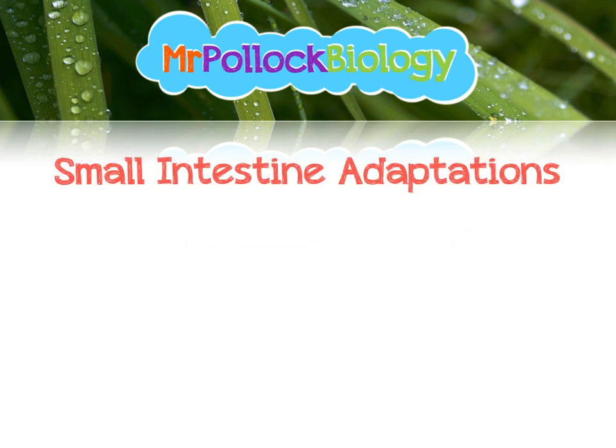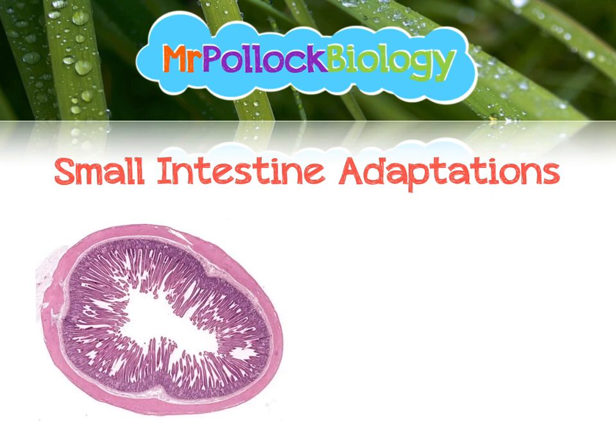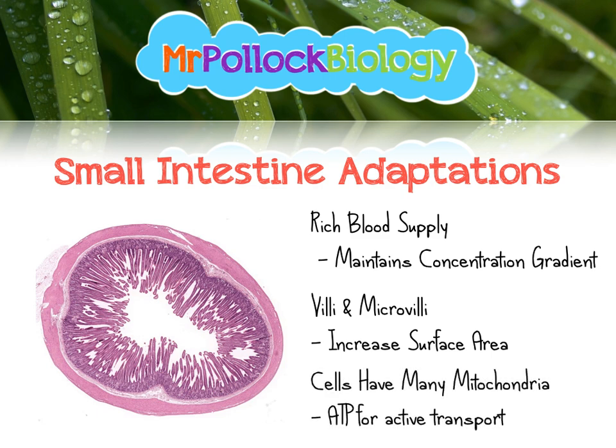Let's have a look at the small intestine and the adaptations that it has. Here's a cross-section of the small intestine. It has a really rich blood supply, and that movement of blood through the small intestine means there's going to be a constant, favourable concentration gradient for all those nutrients that need to be absorbed. You can also see villi that project into the lumen, which massively increase the surface area. Looking closely, there are further projections called microvilli that serve to further increase the surface area. The epithelial cells have many mitochondria to provide ATP for active transport.